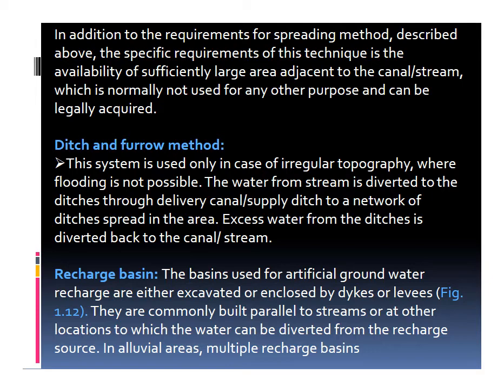The next method is the ditch and furrow method. This system is usually used only in case of irregular topography where flooding is not possible. The water from a stream is diverted to ditches through a delivery canal or supply ditch to a network of ditches spread over the area. Excess water from the ditches is diverted back to the canal or stream.